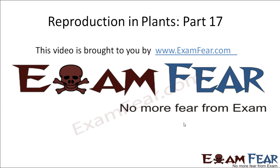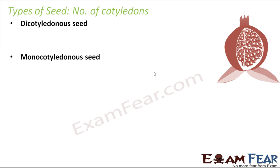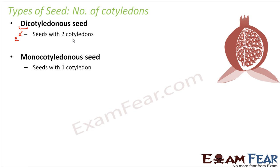Hello friends. This video on reproduction in plants part 17 is brought to you by examfear.com. Based on the number of cotyledons, there are two types of seeds: dicotyledonous and monocotyledonous. 'Di' means two, so these are seeds with two cotyledons, and monocotyledons are those with one cotyledon because 'mono' means one.